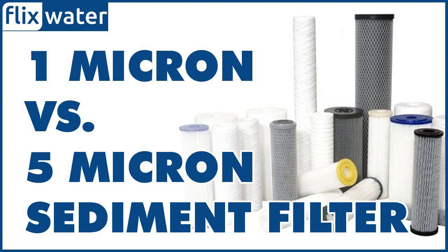You'll also want to consider what you're trying to remove from the water. Cysts are parasitic bacteria common in many water supplies that can make you seriously ill. Most city water treatment plants make sure the water is free of cysts, but it's possible for cysts and other bacteria to get into the city water supply. It's a good idea to use a point of use micron filter, typically 1 micron or less, tested and certified for cyst reduction.